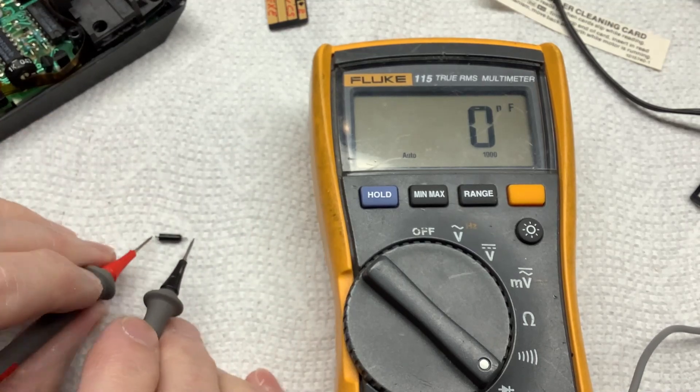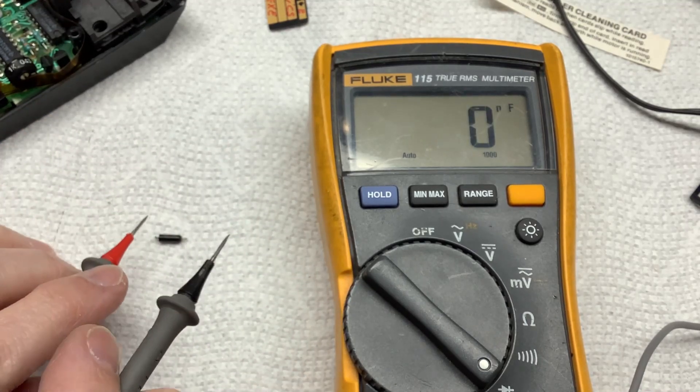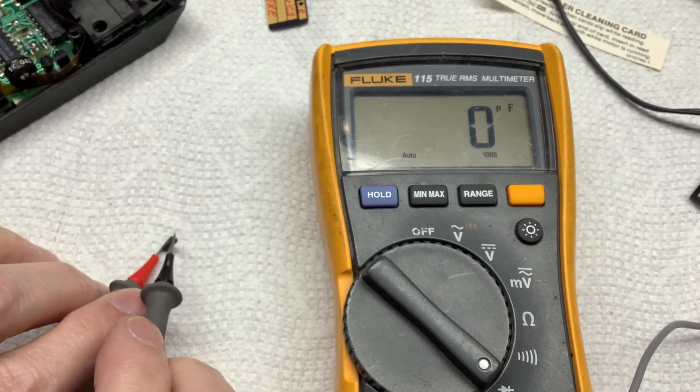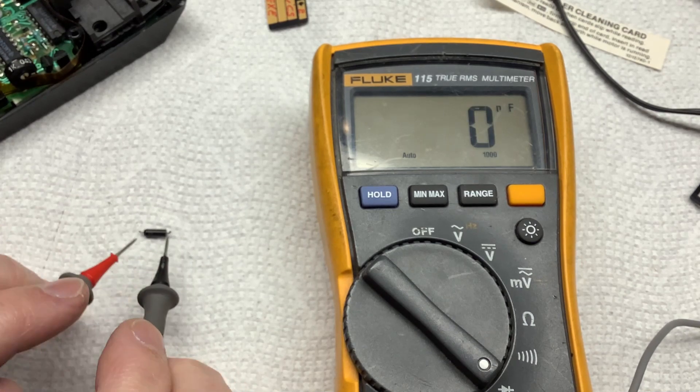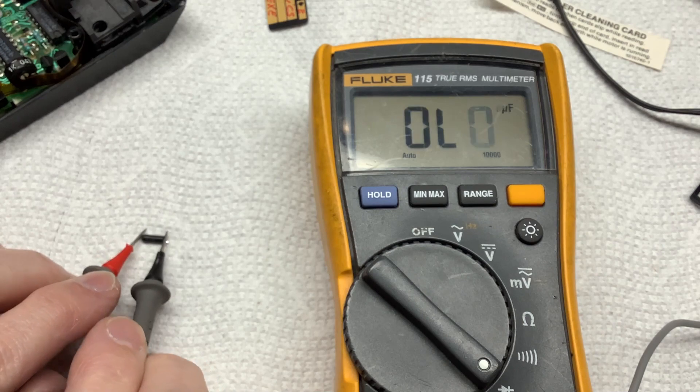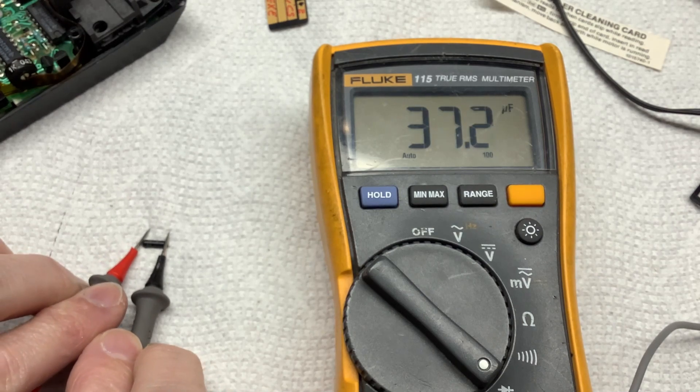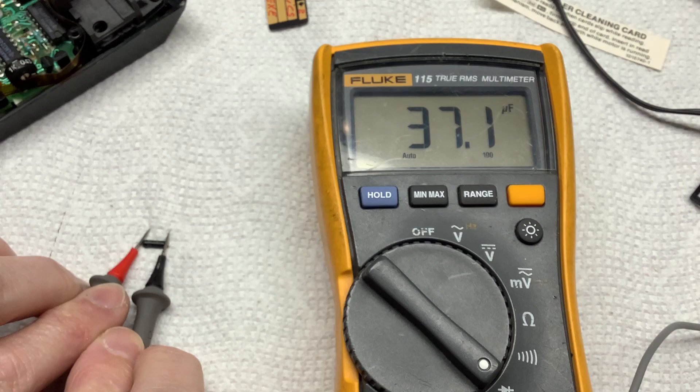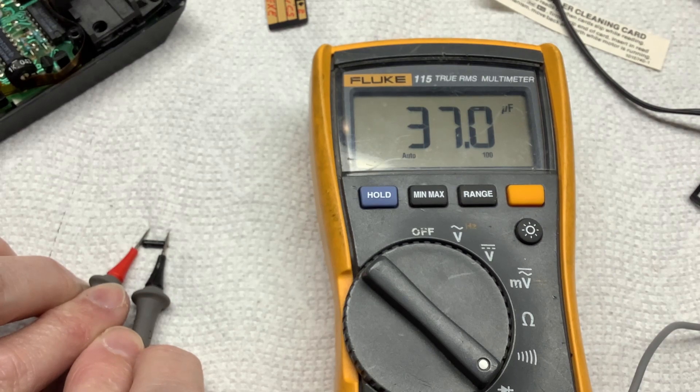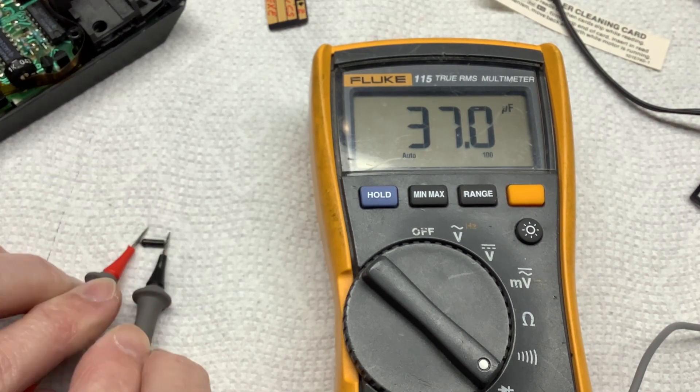So if you use, I've got the meter set in microfarads right now. So if you just look at microfarads, then this cap looks relatively okay. It's supposed to be 33. So it is reading high, but it looks relatively okay.